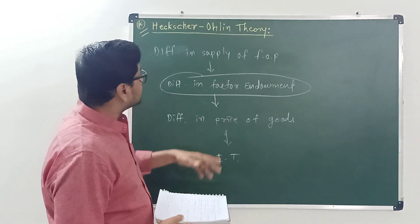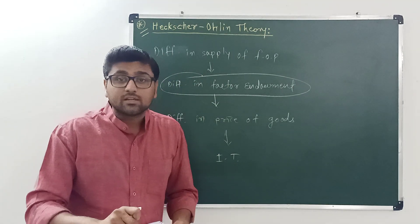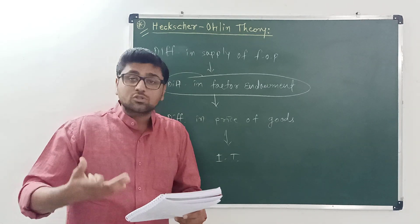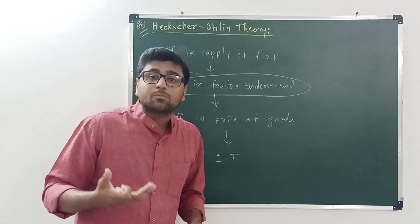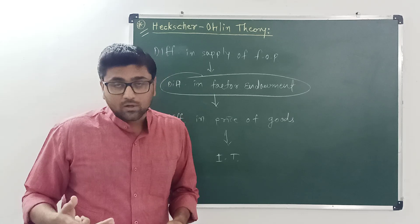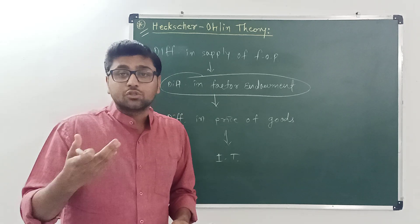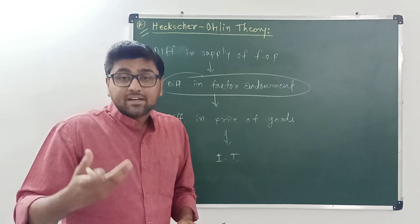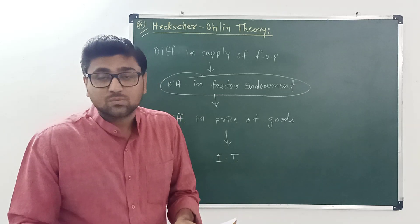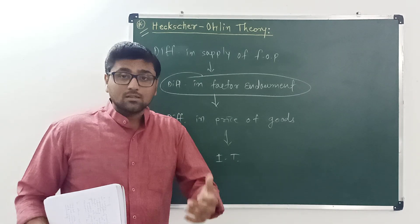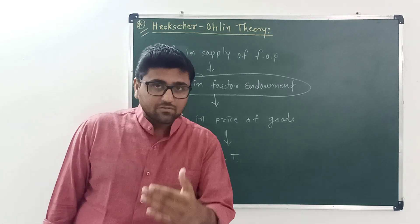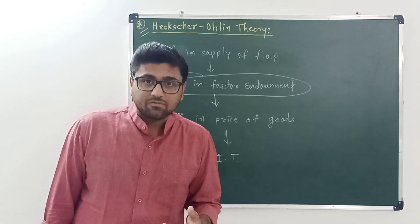The definition of the Heckscher-Ohlin theory states that a nation exports goods which use a relatively greater proportion of its abundant and thus cheap factor of production, and imports goods which use a relatively greater proportion of its scarce and thus expensive factor of production. In other words, a capital-abundant nation exports capital-intensive commodities and imports labor-intensive commodities.